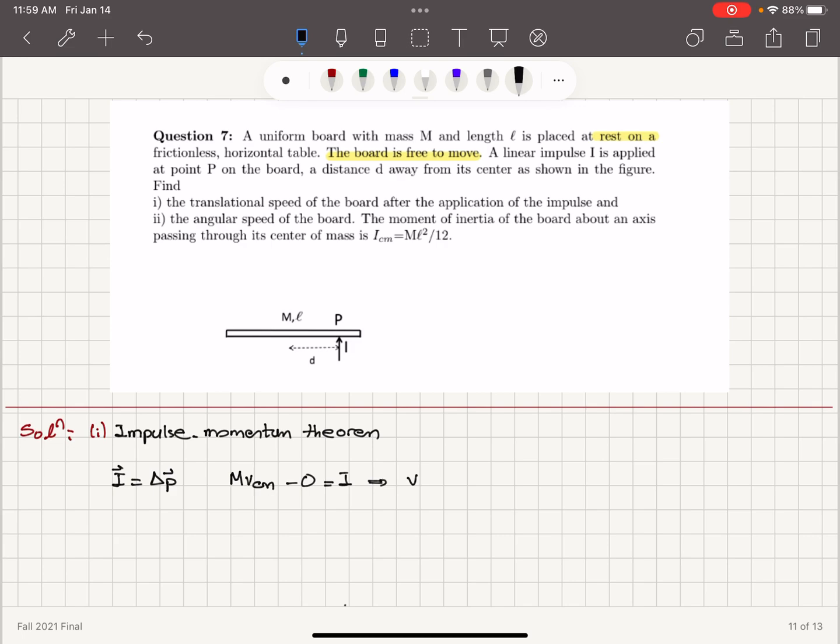Therefore, we will see that the translational speed of the board after the application of the impulse will be impulse I divided by the mass M.